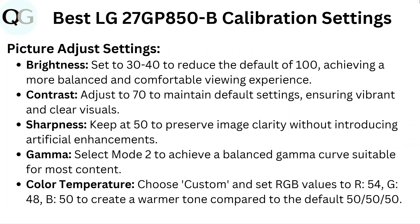Picture Adjust Settings: Brightness — set to 30 to 40 to reduce the default of 100, achieving a more balanced and comfortable viewing experience. Contrast — adjust to 70 to maintain default settings, ensuring vibrant and clear visuals. Sharpness — keep at 50 to preserve image clarity without introducing artificial enhancements.